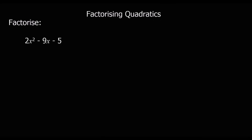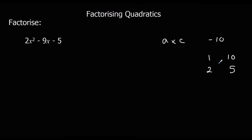Here's another question — we'll follow the same steps. So a times c first: the first one times the last one. 2 times minus 5 is minus 10. We can largely ignore the minus, but it's worth noting it is negative. So we look at factors of 10: 1 times 10 or 2 times 5. We need to make 9, so it's going to be 1 and 10. And it's a minus 9, so we're going to have minus 10x plus 1x — we've rewritten minus 9 as minus 10 plus 1, undoing the adding from expanding.